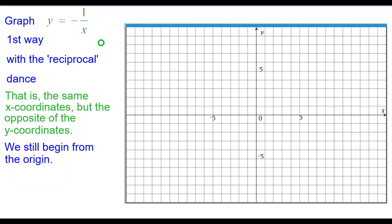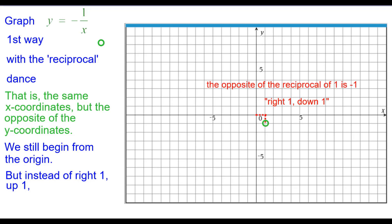We're going to graph this with the reciprocal dance. We'll still begin from the origin, even though the origin is not a point on the graph. But instead of going right 1 up 1 like we normally would on the reciprocal dance, we're going to go right 1 down 1 — because the opposite of the reciprocal of 1 is negative 1.